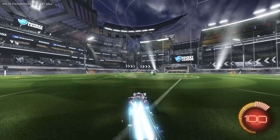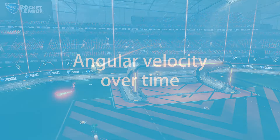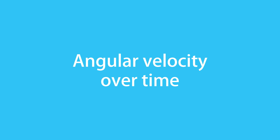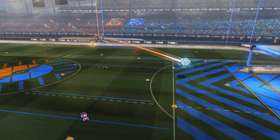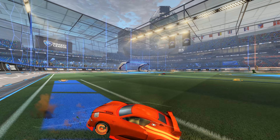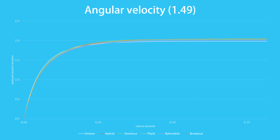I also did this at only two different car speeds. So let's just show how the angular velocity actually behaves when you start turning while at maximum linear velocity. In this graph, you can see the time on the x-axis and the angular velocity on the y-axis. First off, something immediately becomes clear.